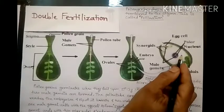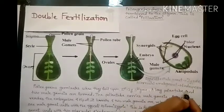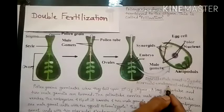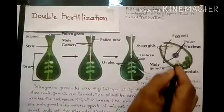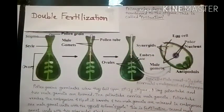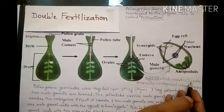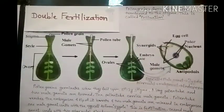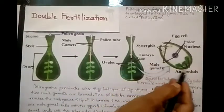When the male gamete unites with the polar nuclei, it forms endosperm. Polar nuclei unite with the male gamete and endosperm is formed. Endosperm is a very important part of the embryo sac.